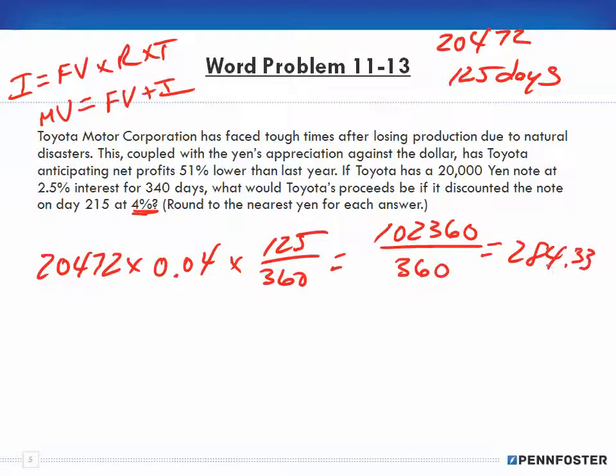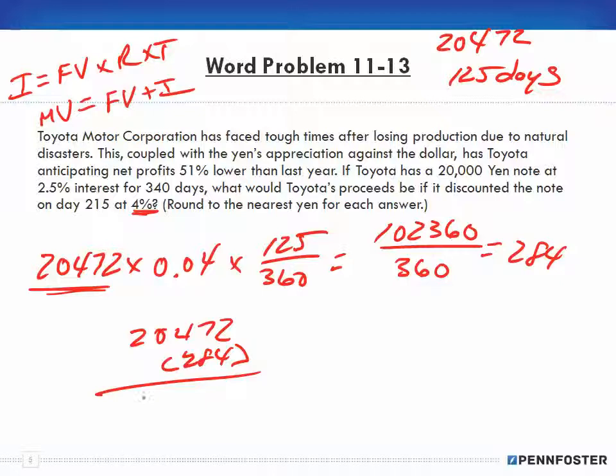We take the face value of 20,472 and we subtract 284, and our proceeds end up being 20,188. So that is the amount of the proceeds that Toyota would get.